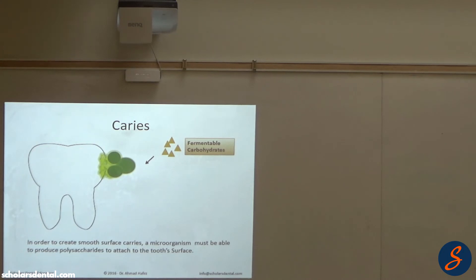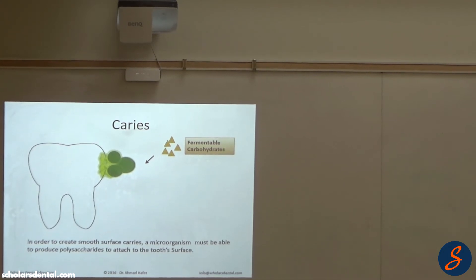So for smooth surface caries to happen, a bacteria has to be able to make these polysaccharides.